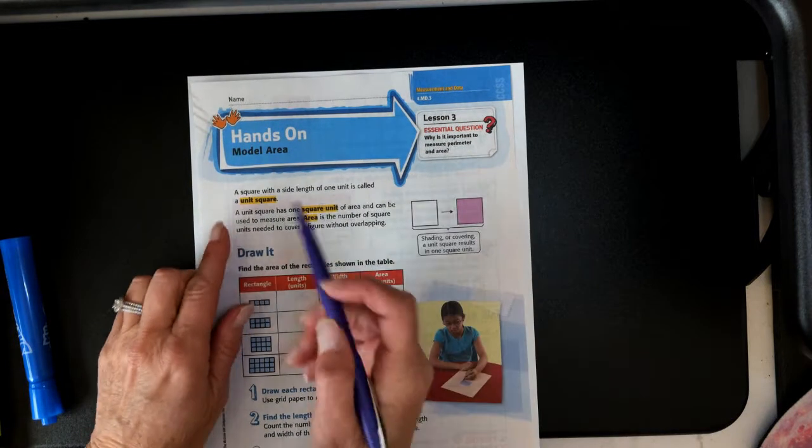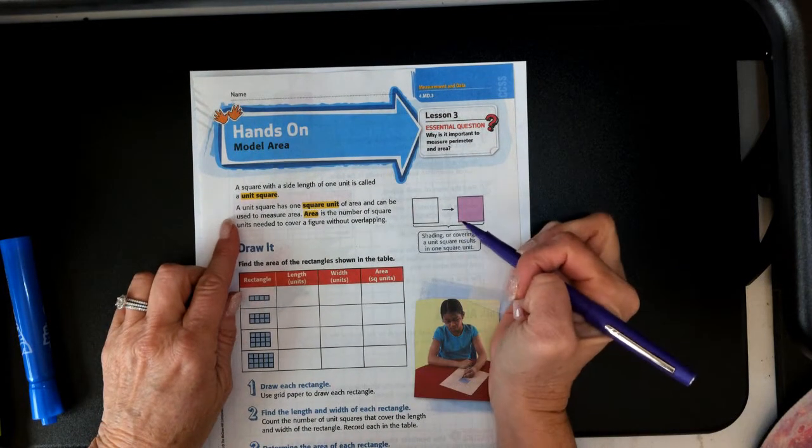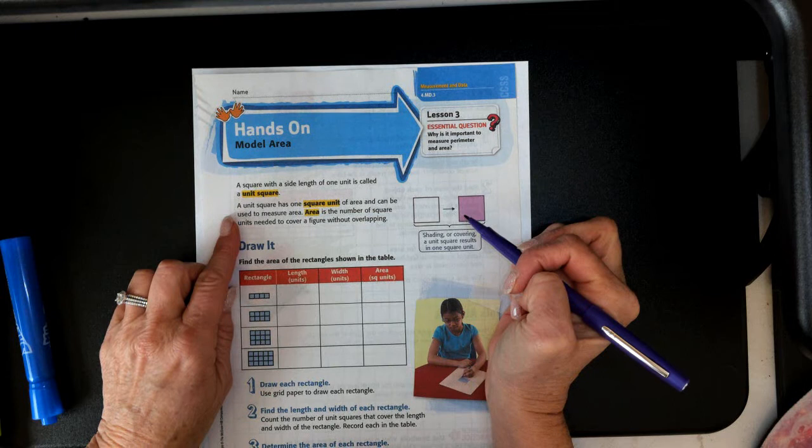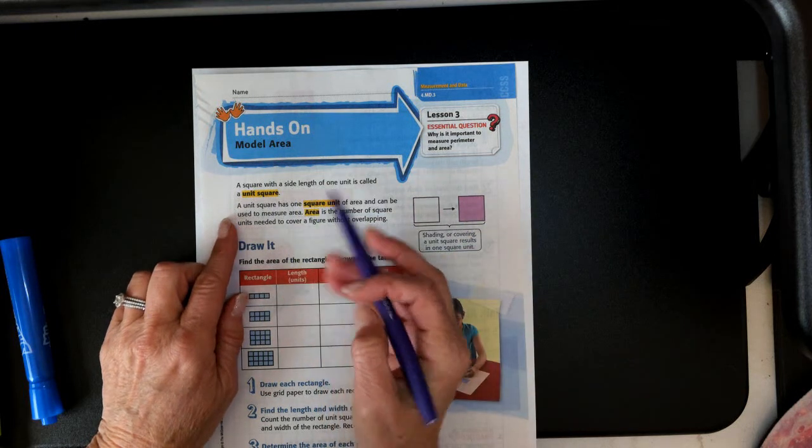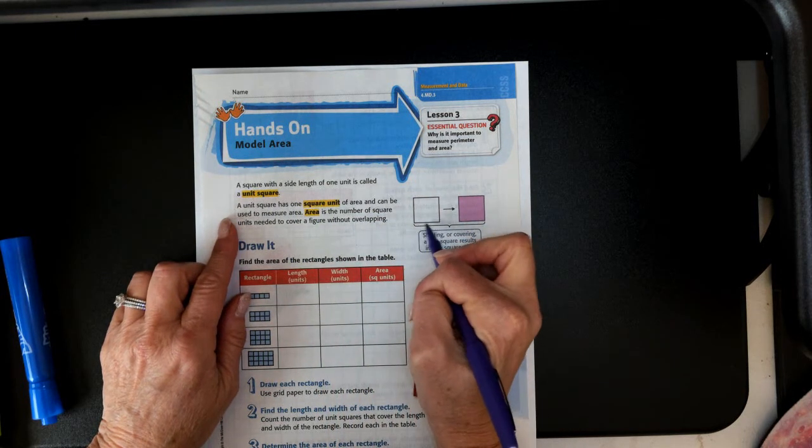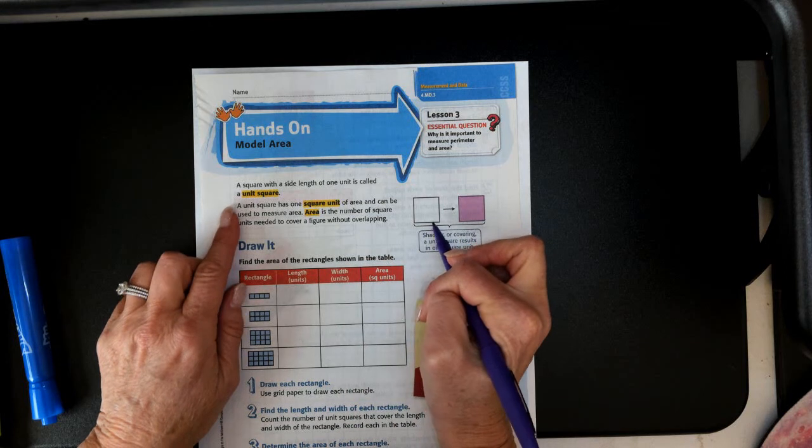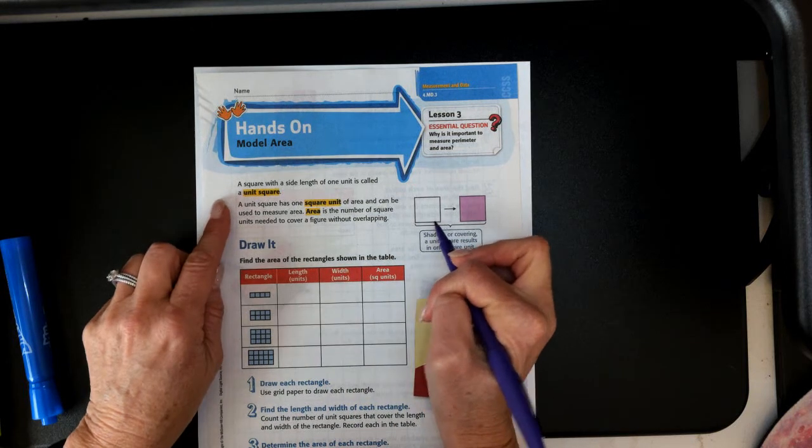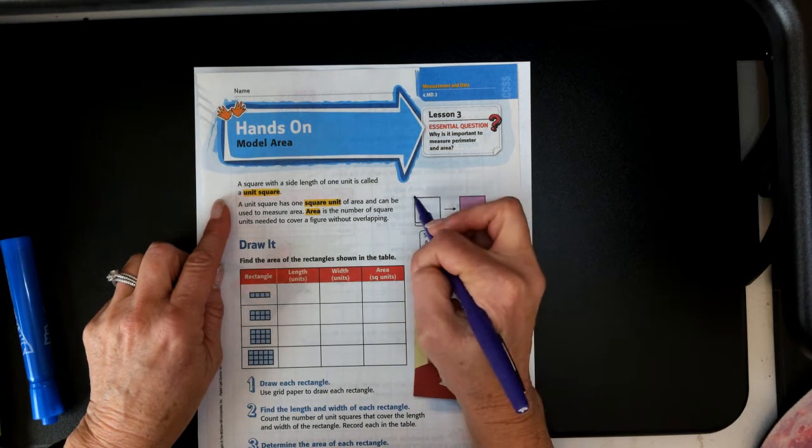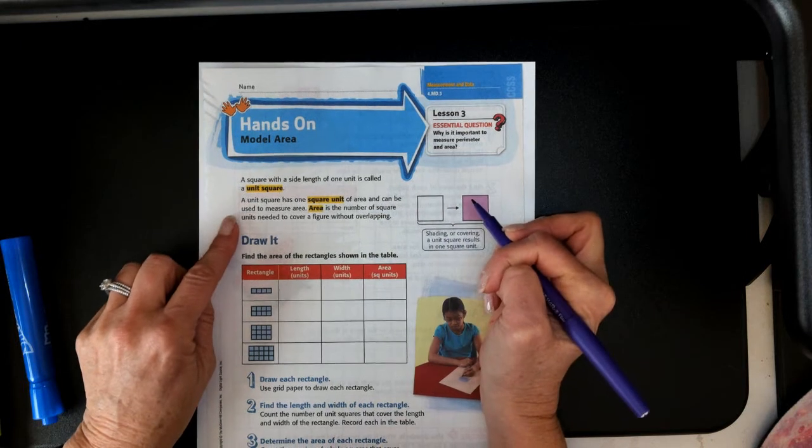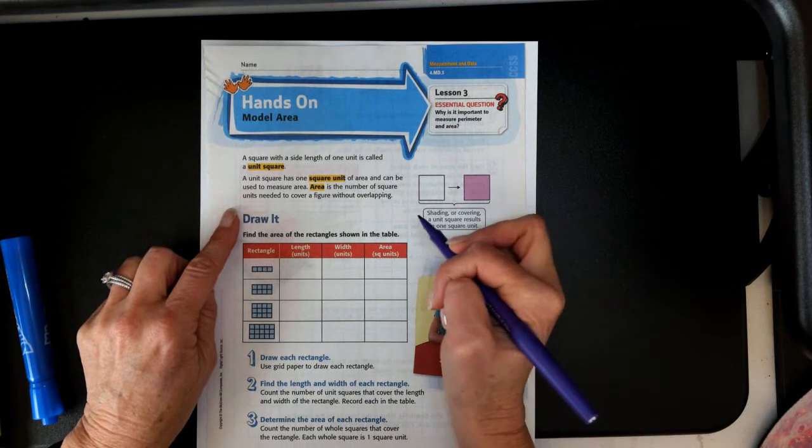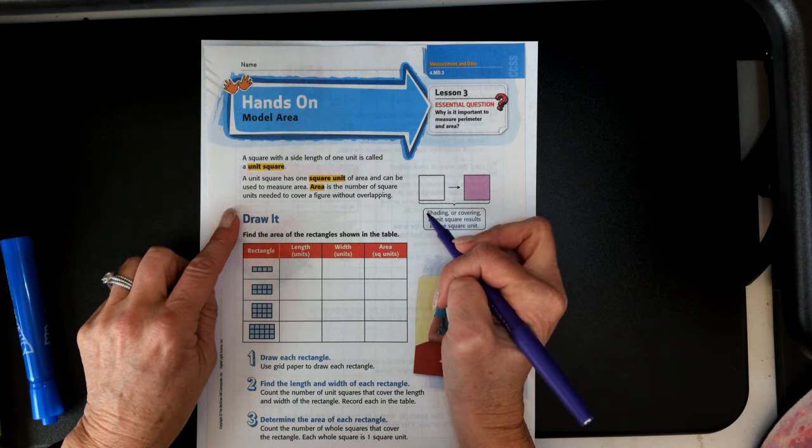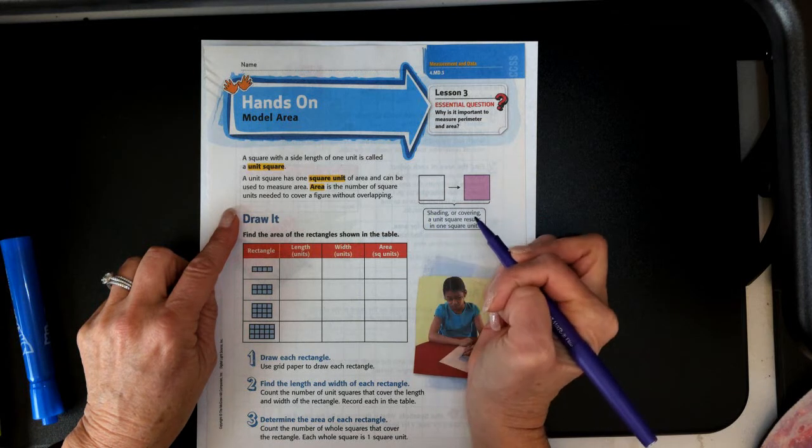We're going to look at different shapes to find the area of those shapes. A square with a side length of one unit is called a unit square. A unit square has one square unit of area and can be used to measure area. Area is the number of square units needed to cover a figure without overlapping.